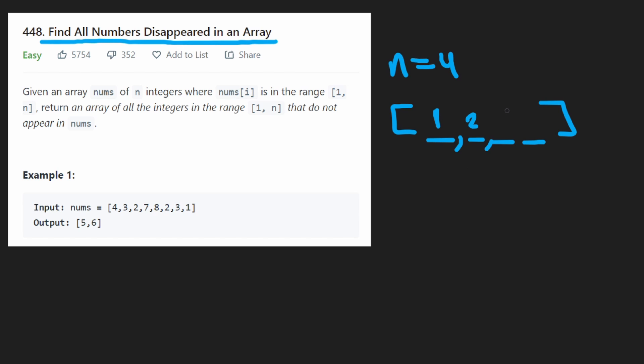But what if we actually had two 4 values? So we have 1, 2, 4, 4. In that case, the numbers in the range 1 through 4 that don't appear in this array is exactly 3. Maybe we're given 1, 4, 4, 4. So in that case, the numbers that don't appear in that range are 2 and 3. So this is what we would return.